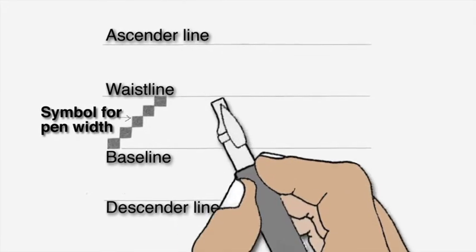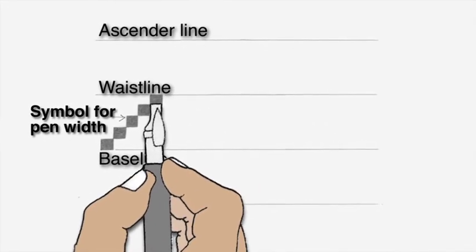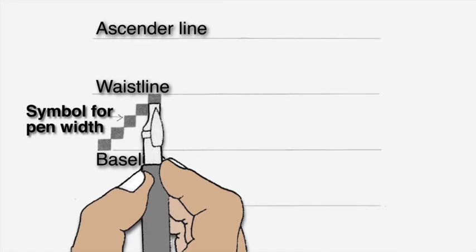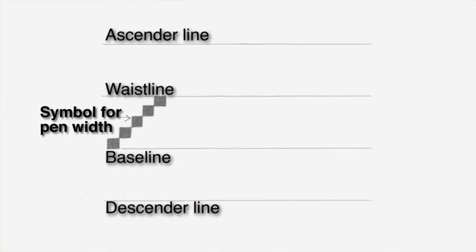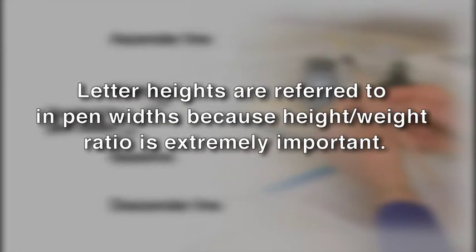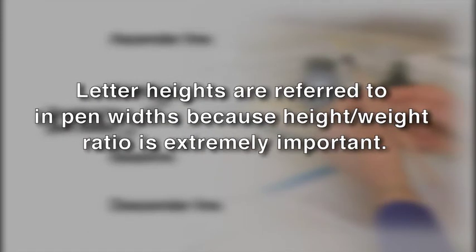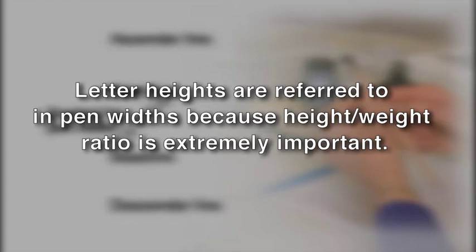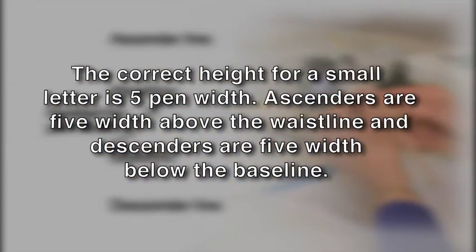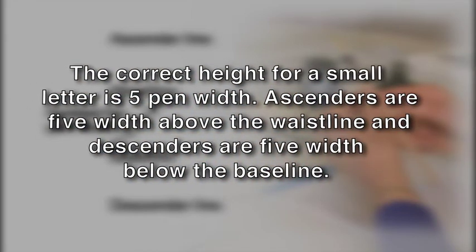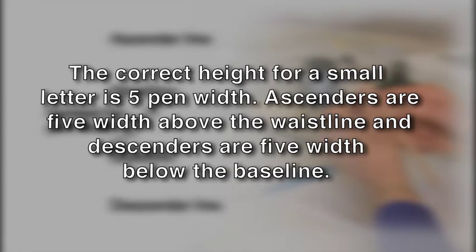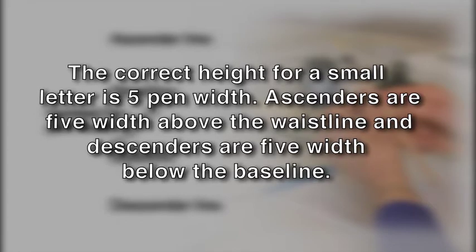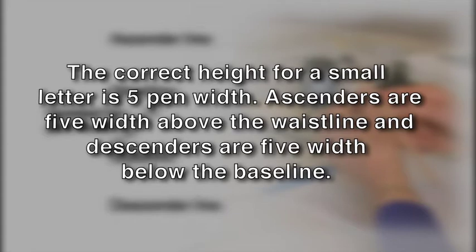Before getting started, it's important to understand the size of the letter you're making. The five squares on a diagonal on the left side of the paper represent the nib widths of the pen. This helps in determining the height of each letter. Letter heights are referred to in pen widths because height-weight relationship is extremely important. The correct size for a small letter is five pen widths. Ascenders are five widths above the waistline and descenders are five widths below the baseline.